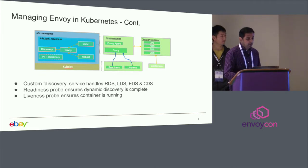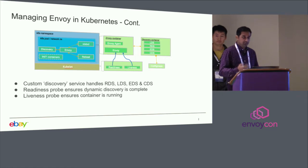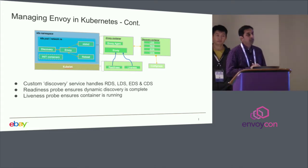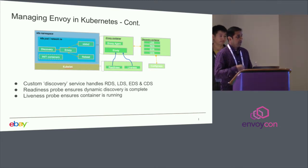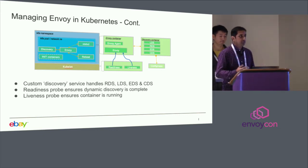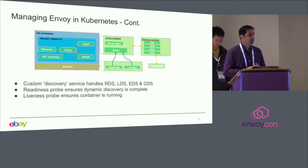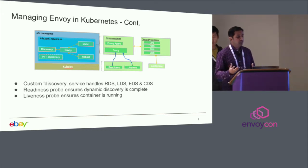Each L7 pod contains the Envoy container, the discovery service, and a bunch of other containers — StatsD, Filebeat. The init container is a good option for tasks that run to completion before Envoy starts, such as fetching a token, changing the congestion control algorithm, or tuning TCP socket settings. That way, those settings are up and running before Envoy comes up.